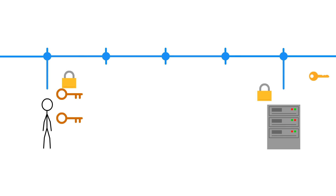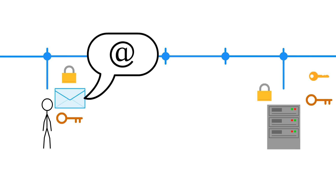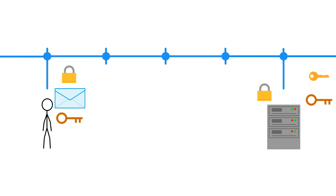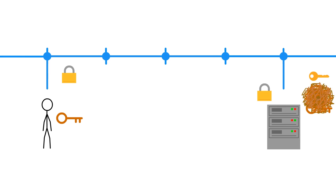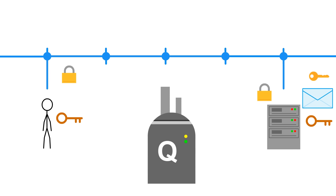The security of the internet depends on encryption. It allows your device and a faraway server to send private messages to each other — like your emails, passwords, and pictures of cats — without anyone eavesdropping. Today's encryption works pretty well, but a sophisticated quantum computer can break it, and a universal quantum computing machine is likely to emerge in the near future.